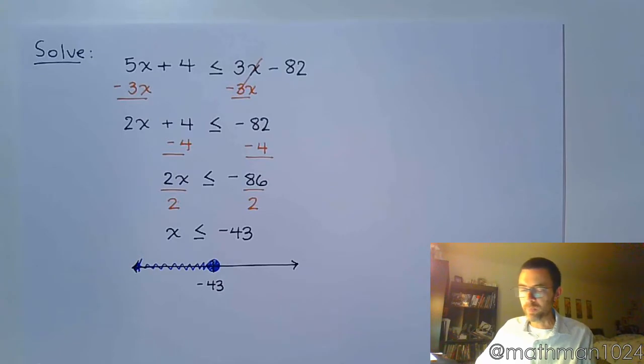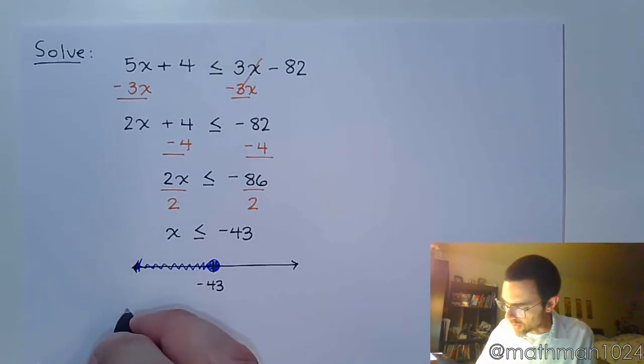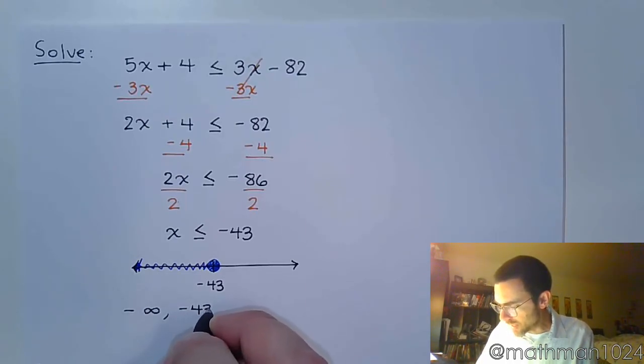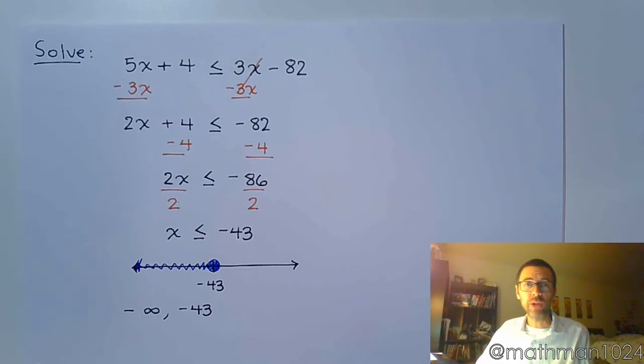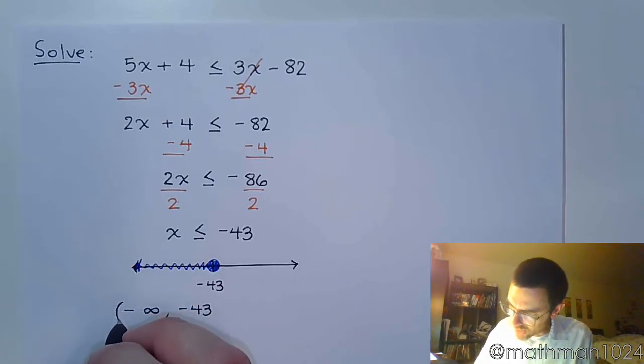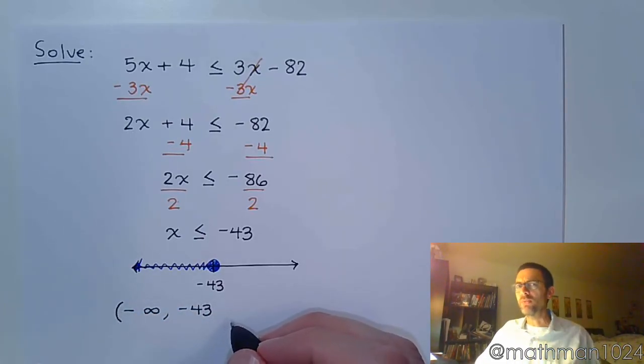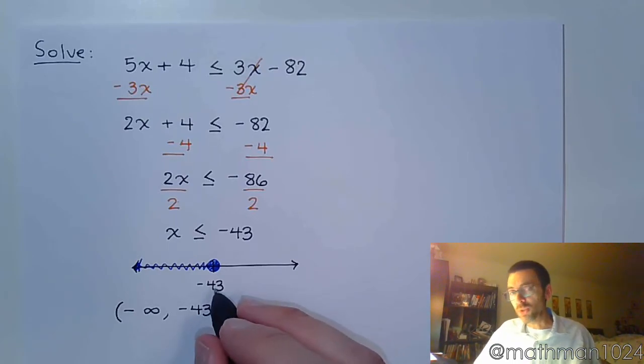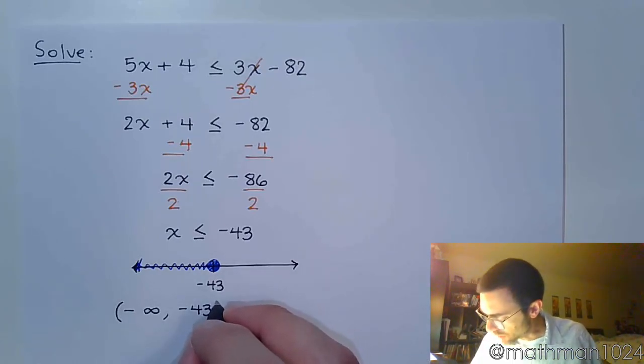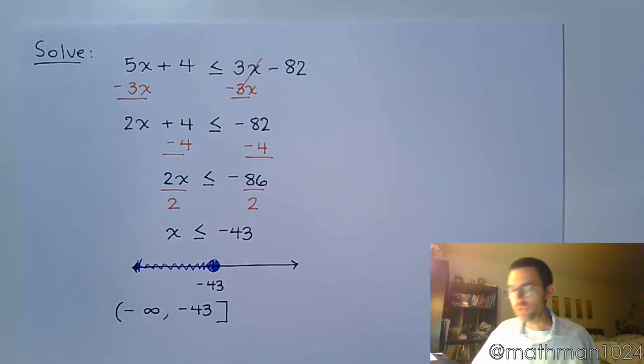The way that we express our interval notation is from left to right, so we're coming from negative infinity going up to negative 43 and we stop. Parentheses on the negative infinity, parentheses always on infinity, and since we are including negative 43, we're going to use a bracket. This is how you would express your solution using interval notation.